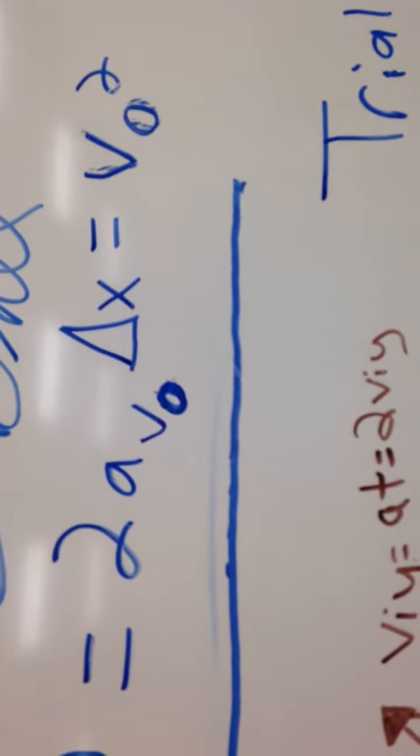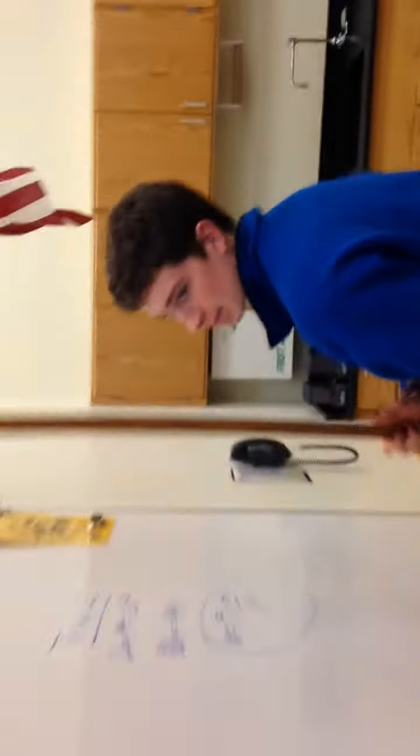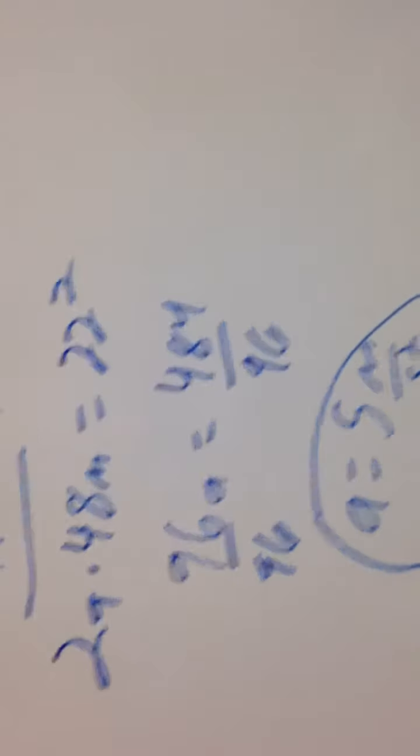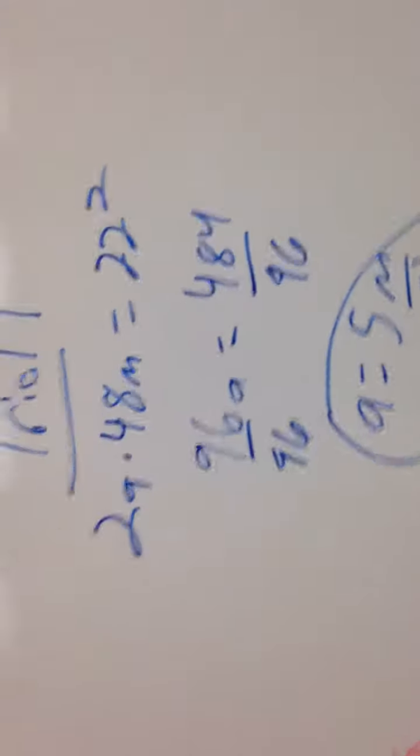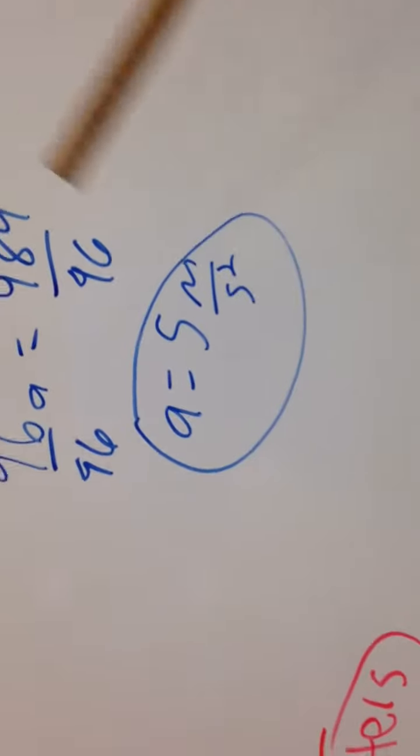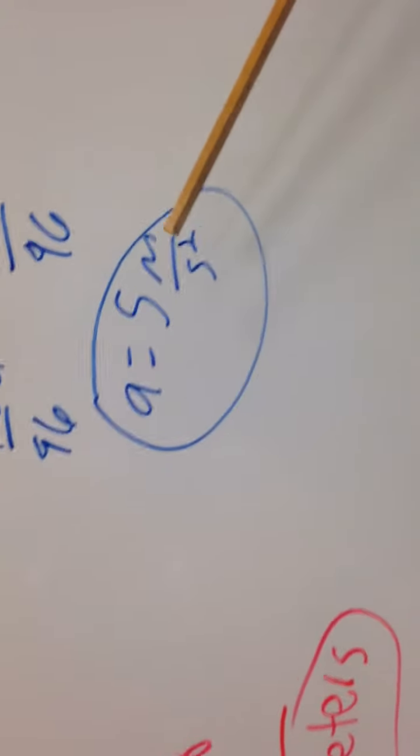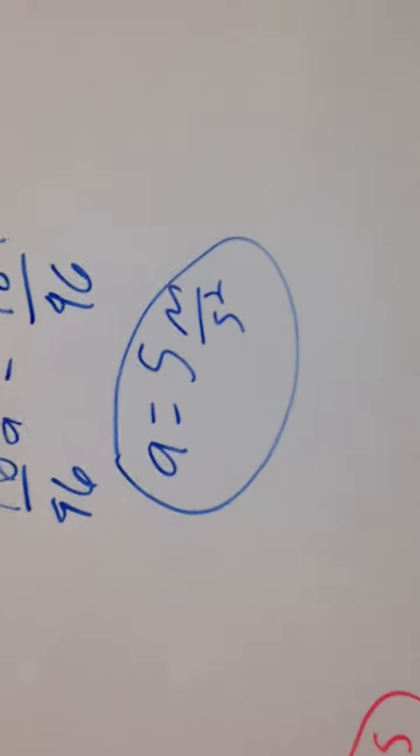On to the calculation. We have 2A times delta X, or displacement, which is 48 meters, equals V-naught squared. After calculating, acceleration is, after significant figures, 5 meters per second squared.